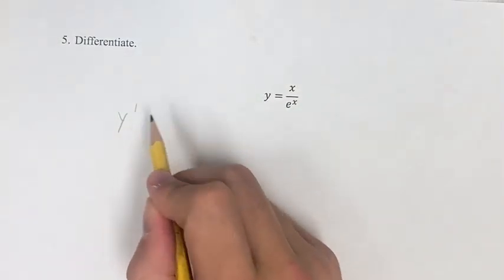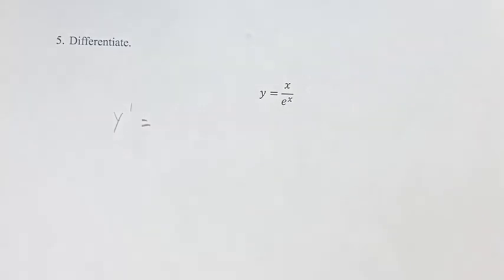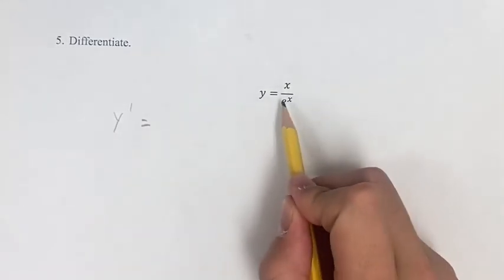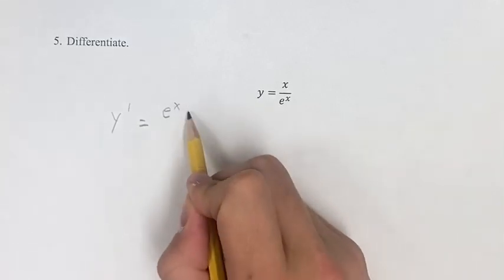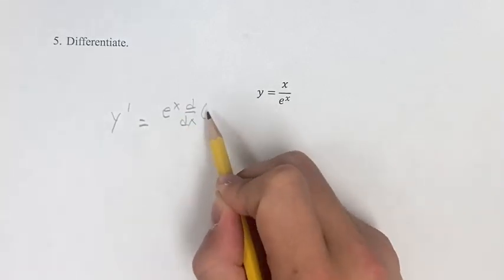Our derivative, y prime, we are going to find using the quotient rule. To do that, we take the denominator and multiply it by the derivative of the numerator.